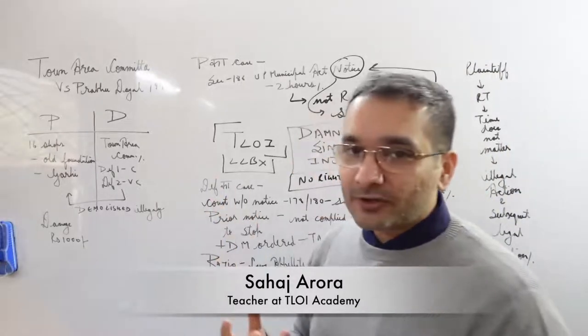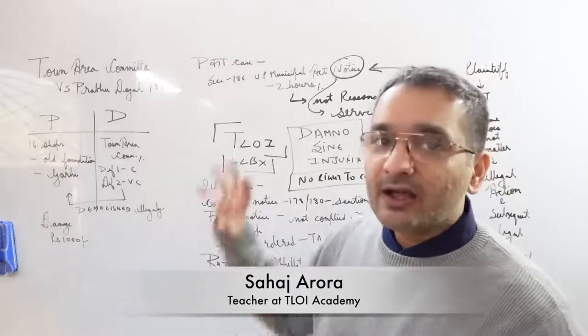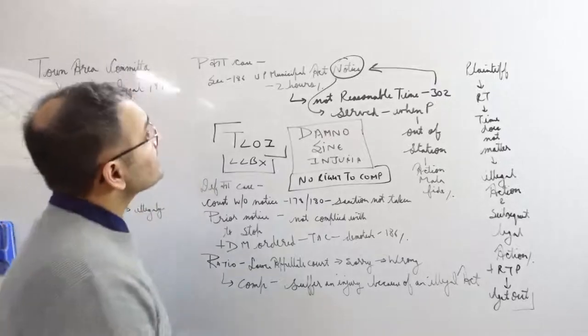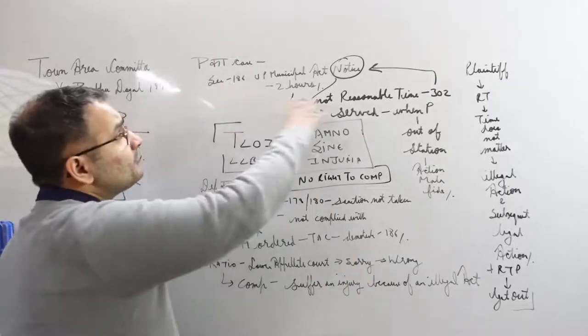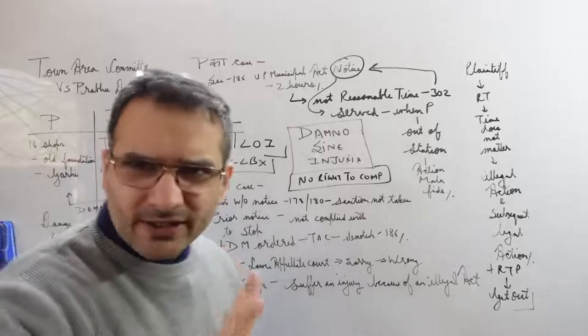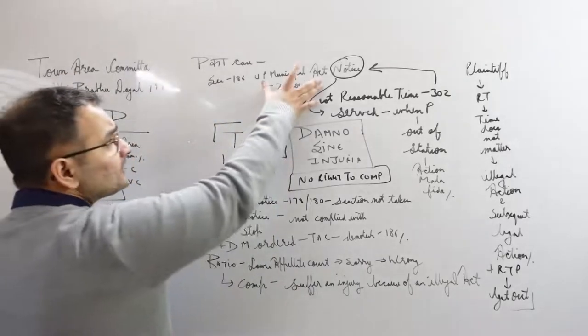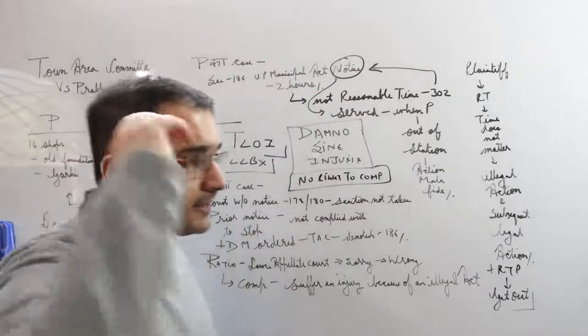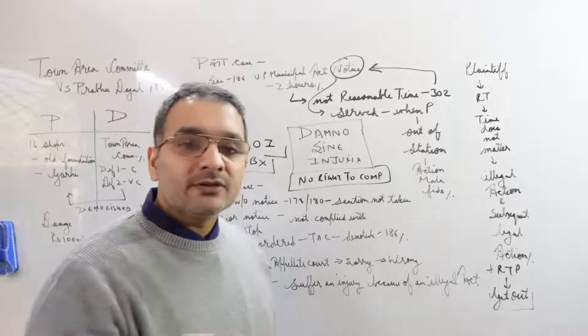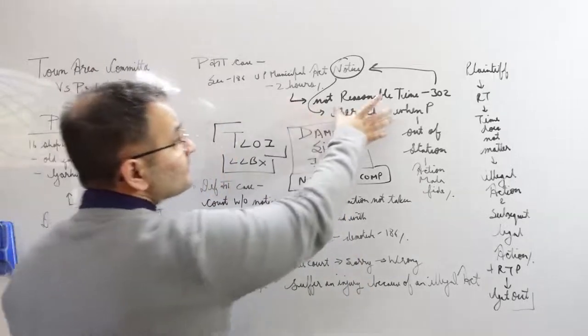Now, what do you not need to remember? If in the exam the building name doesn't come to mind, overall macro-wise you will have to basically explain the case. So plaintiff's case was that under section 186 of UP Municipal Act the notice wasn't served. Now be careful, if you forget this section it is absolutely alright. The examiner isn't really looking - examiner hasn't memorized UP Municipal Act themselves.